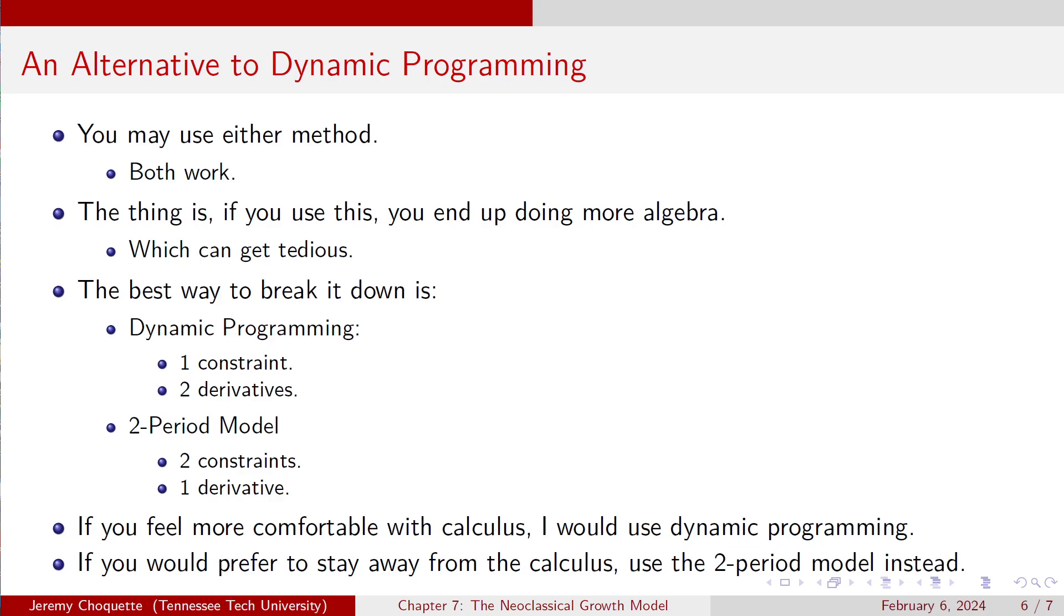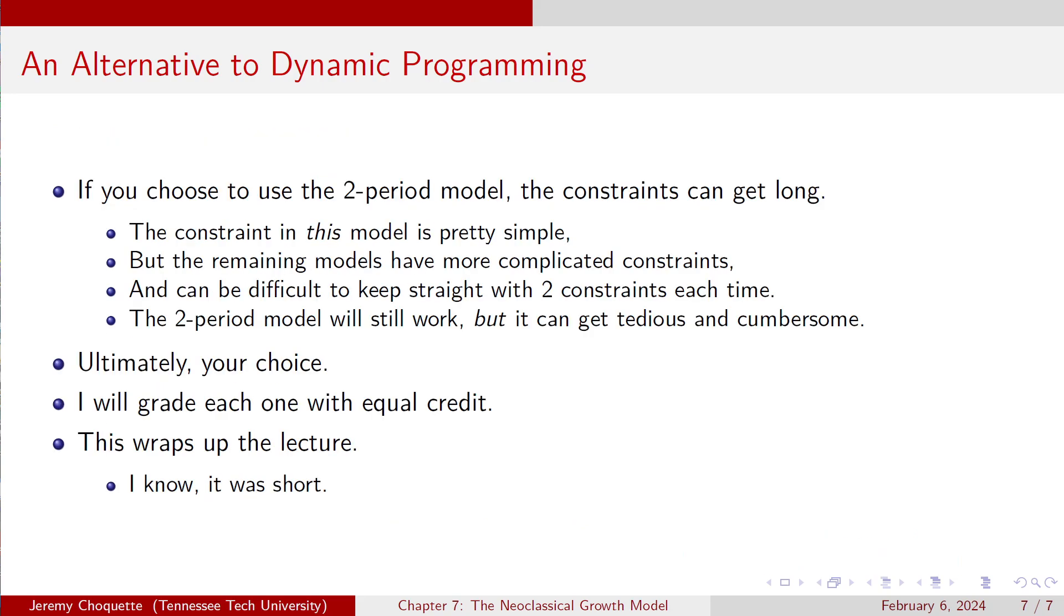If you'd like to stay away from the calculus, do the two-period model. If you're like, maybe I can get used to the calculus a little bit, try the dynamic programming. Try both. And make sure you can get the answer the same way. If you get the answer the same way, you know you did them both right. Or you did them both horribly wrong and by chance you got the wrong answer. Let's assume that, you know, you did it right.